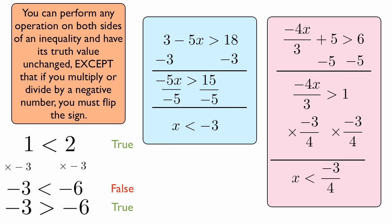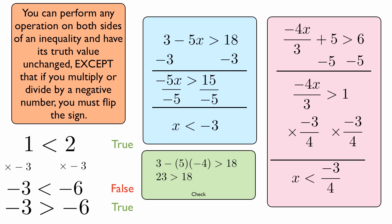Now, if you're not sure what you did or why it holds, or if you flipped the sign properly, you can always check by picking a potential value. Look at the blue rectangle. How can we check that? We pick a value that falls in the solution set — in other words, a value that's less than negative three, because the answer was x is less than negative three. Suppose x is negative four. We replace x by negative four and see if it holds. Three minus five times negative four is three minus negative 20, which is 23. And indeed, 23 is greater than 18. So our solution set seems correct from this check. This isn't a perfect check, because maybe you made some other sort of mistake, but it certainly shows that the sign is in the right direction.